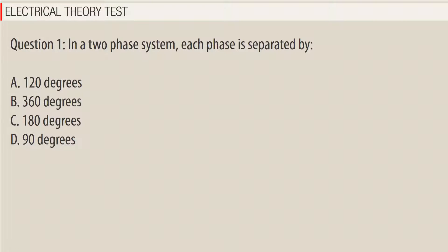Question 1: In a two-phase system, each phase is separated by — A. 120 degrees, B. 360 degrees, C. 180 degrees, D. 90 degrees.